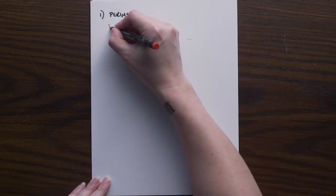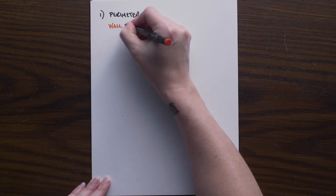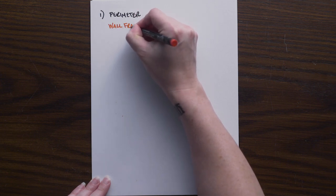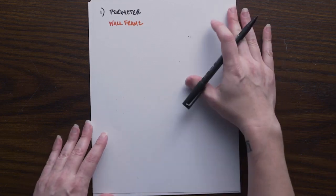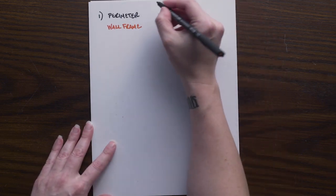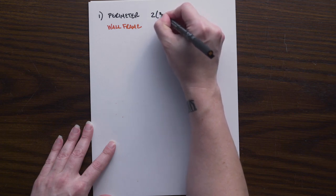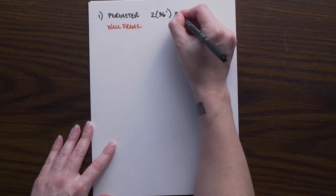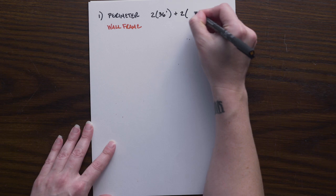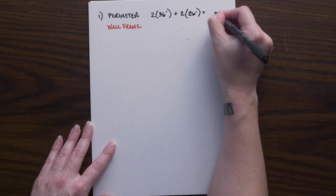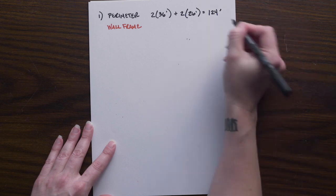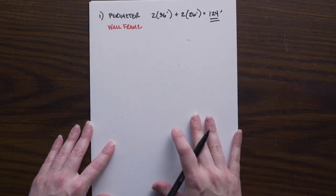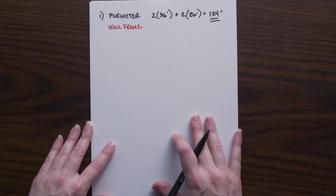This is one that we have calculated multiple times throughout our sample problems. If you look at the wall frame sample problem, you will find how to work this out in detail. But again, it is simply going to be two times our length of 36 feet plus two times our width of 26 feet. We are not using our brick ledge when we are calculating our perimeter. So 124 feet will be the exterior perimeter we need for our calculations.